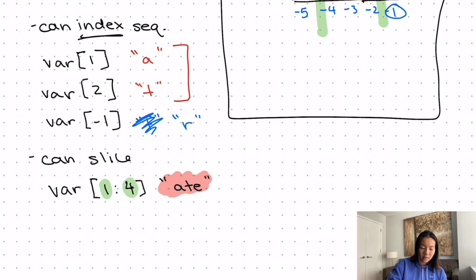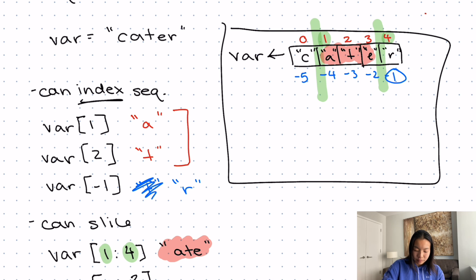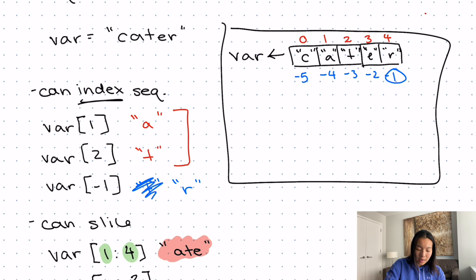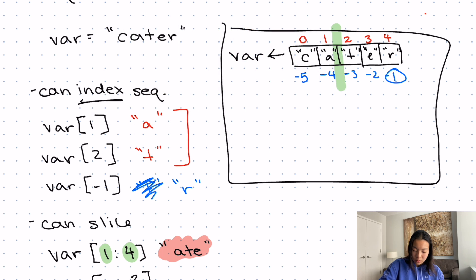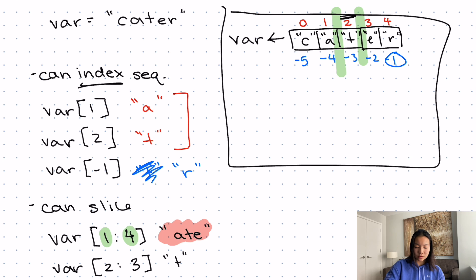Which means if I did something like the variable, let's say two to three, what would that be? It's a little bit of a tricky question. But for this one, we would go to the left of two and to the left of three. And so what this one actually ends up being is just t, because that's what's in between these two.